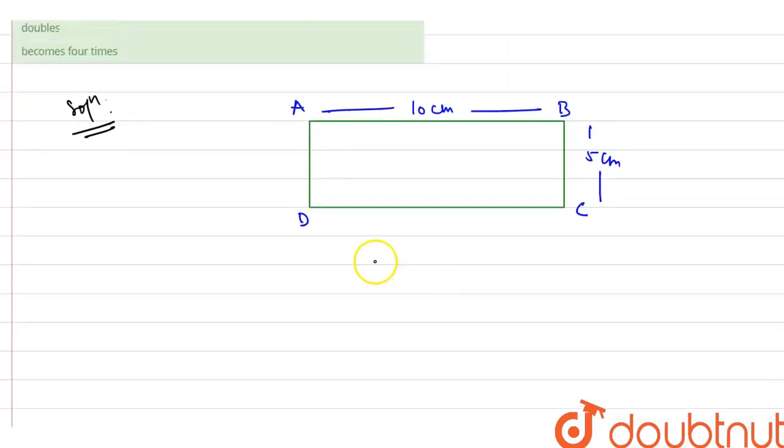Now, we can also understand. Leave it, try to understand. This is A centimeters. This is B centimeters. And we have another rectangle like this. If we talk about this rectangle, this is like P, Q, R, S.